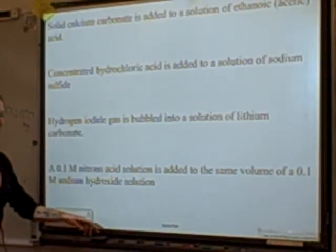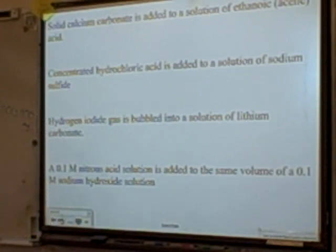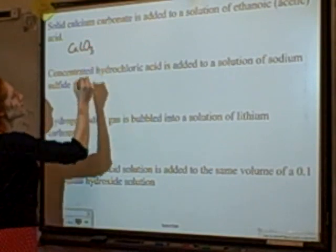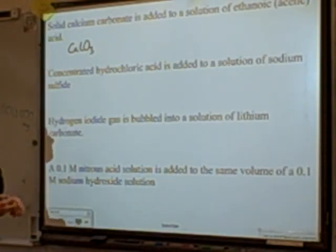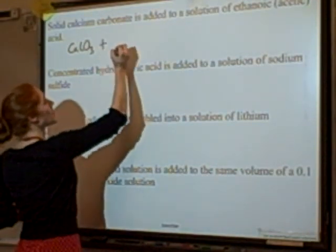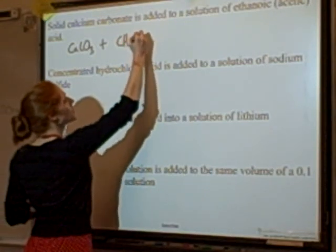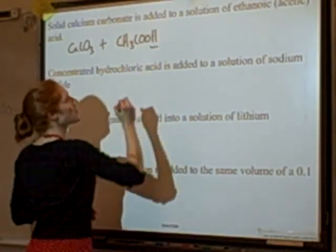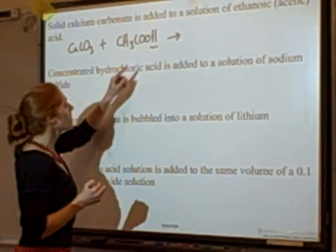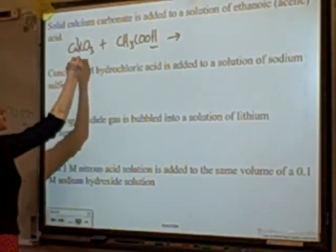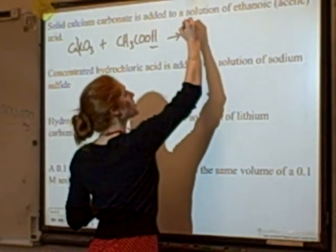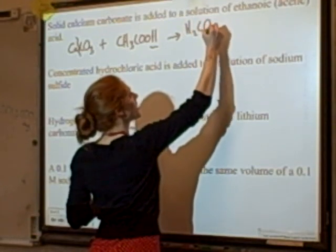It's all about practice and knowing your polyatomic ions and acids. Example: solid calcium carbonate, CaCO3 — written together because it's a solid — is added to an aqueous solution of ethanoic acid (acetic acid), which is a weak acid, so it's written all together as CH3COOH. The acidic H is the H+ that comes off. The carbonate takes on two H+ ions to form H2CO3, carbonic acid.